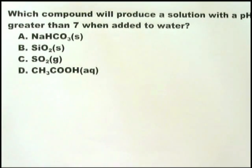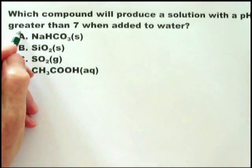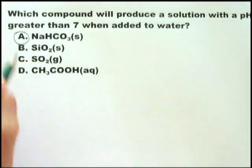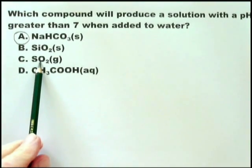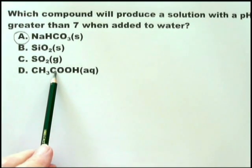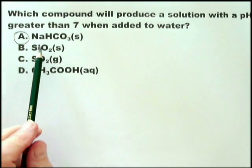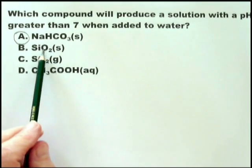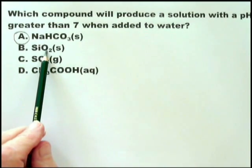Of these, the only one that is alkaline, and therefore has a pH greater than 7, is sodium bicarbonate. As I've said before, oxide of sulfur, acid. Ethanoic acid, carboxylic acid. Silicon dioxide, well, as a solid, it doesn't really dissolve in water, but it would be regarded as acidic.